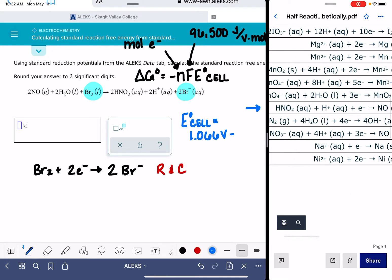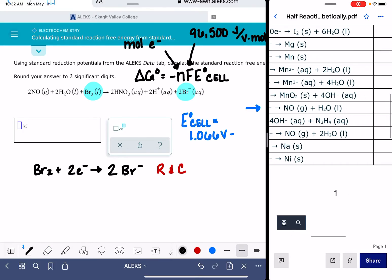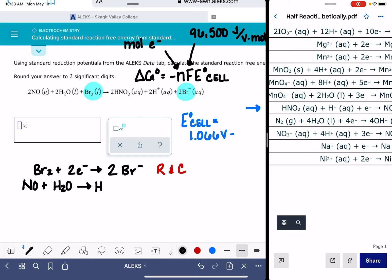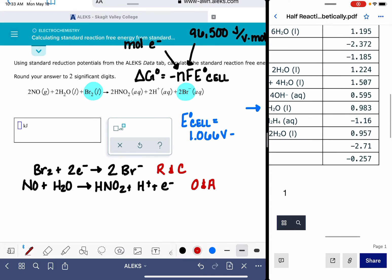HNO2 plus H plus makes NO and H2O. So I'm going to copy this one down. I'm going to copy it in reverse, so I'm going to copy it the way that we have it in our balanced equation. NO plus H2O makes HNO2, H plus and electrons. And again, this is our oxidation, and this is taking place at the anode.